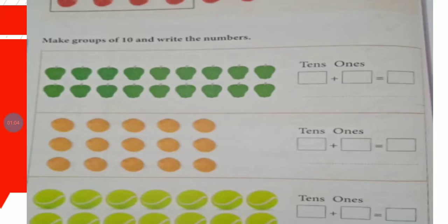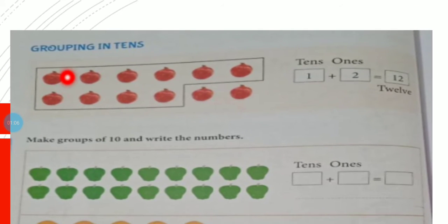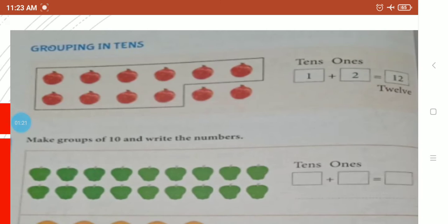Now we are moving to the next concept: grouping in tens. See here, some pomegranates are given. First we will count: one, two, three, four, five, six, seven, eight, nine, ten, eleven, twelve. The total number of pomegranates is twelve.